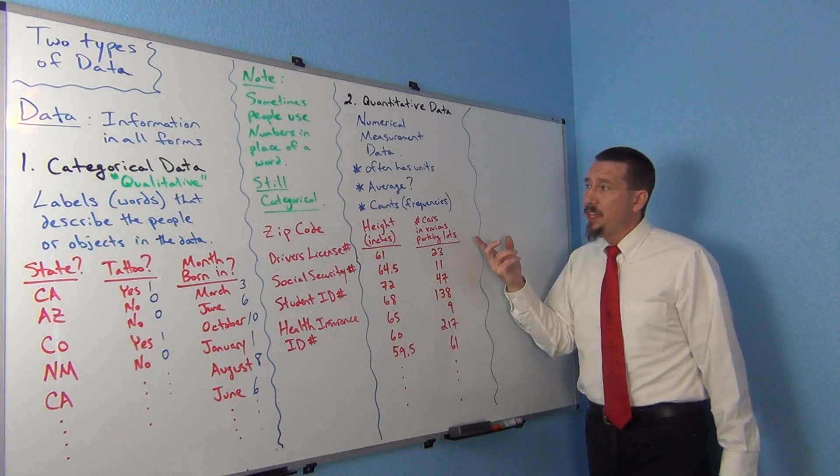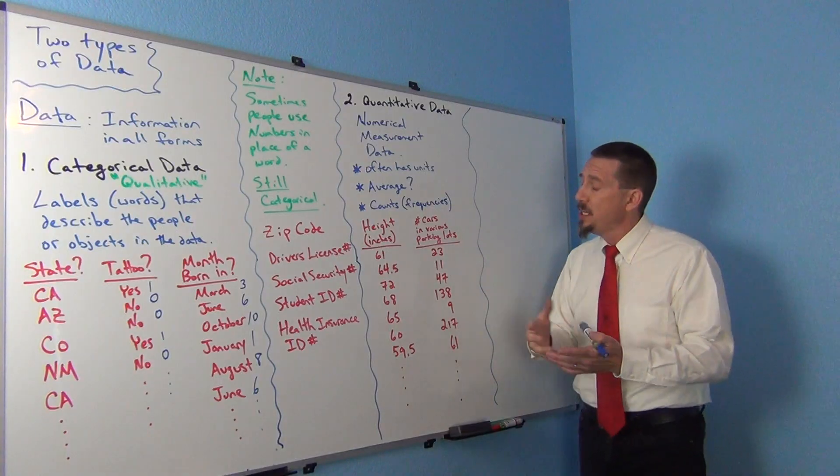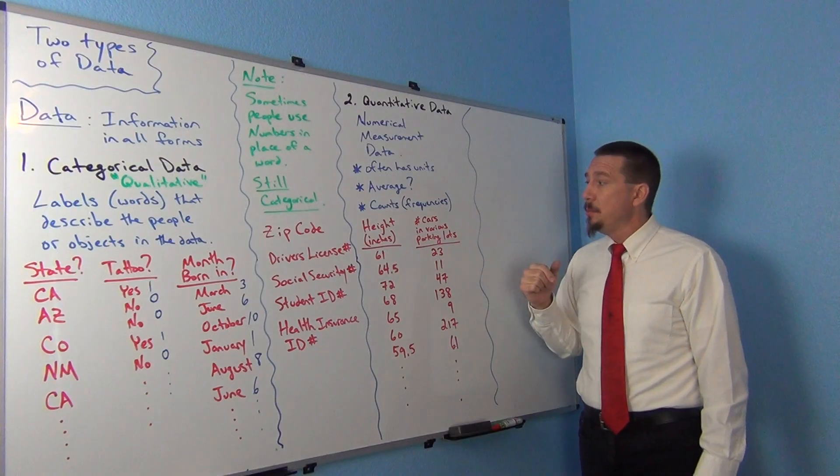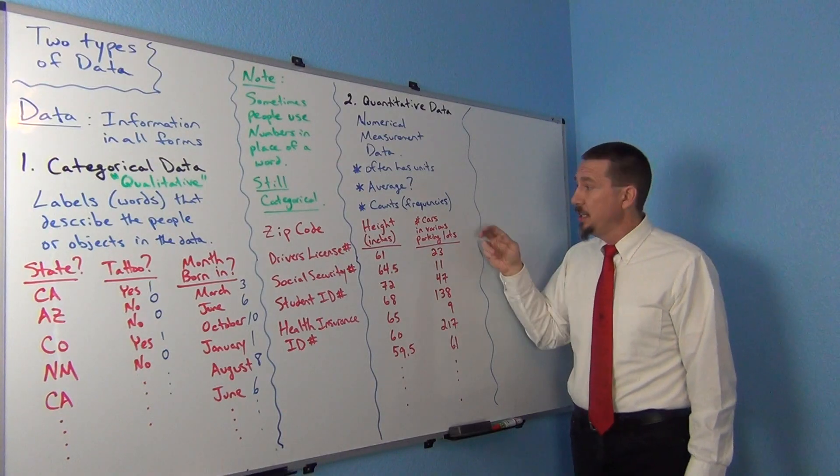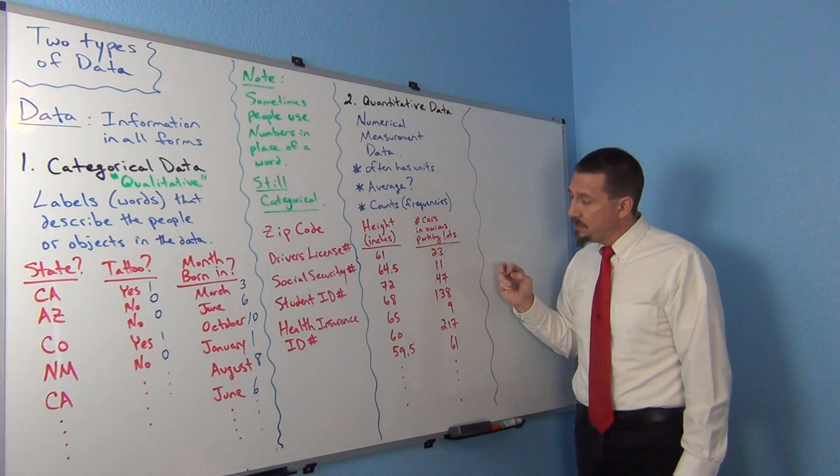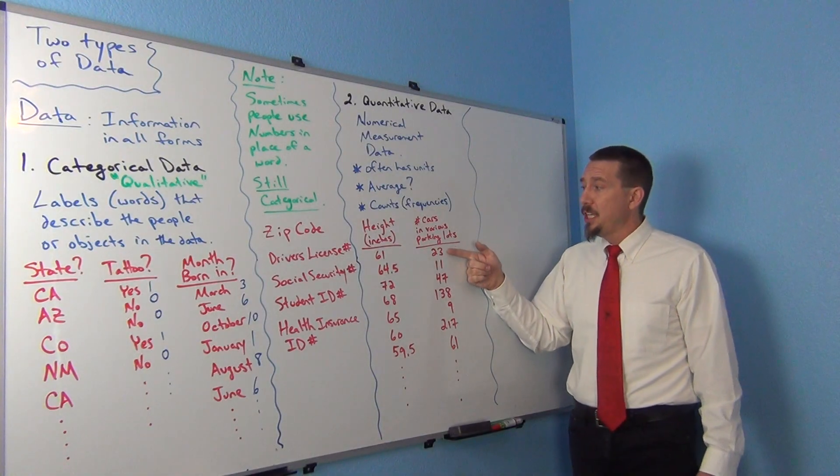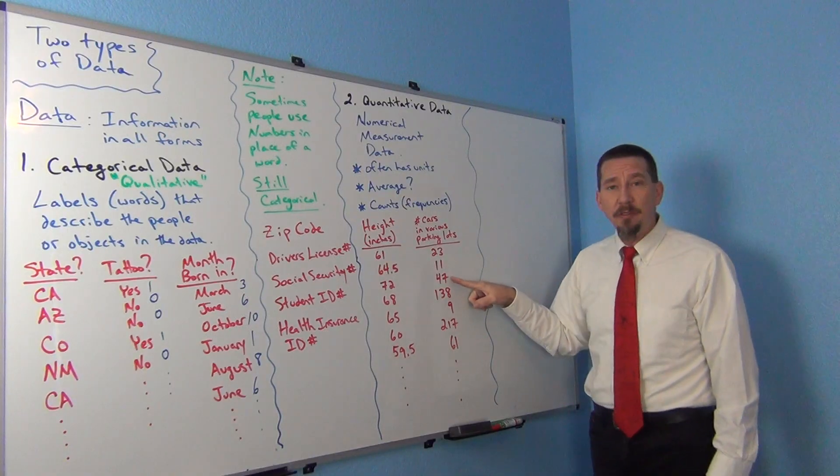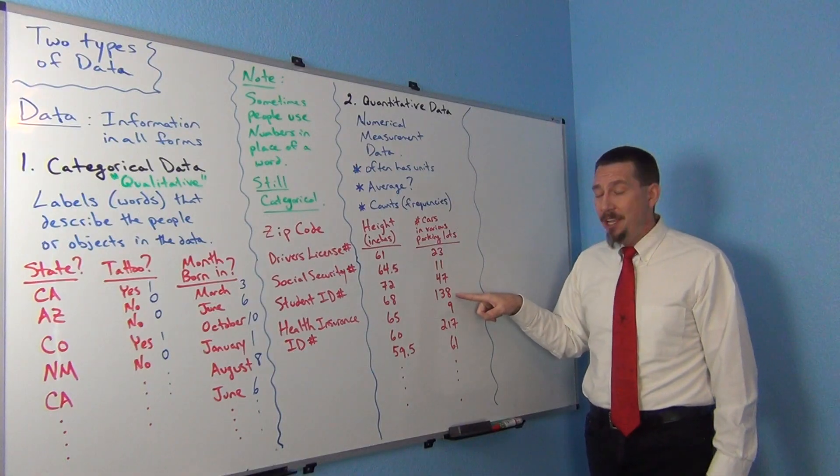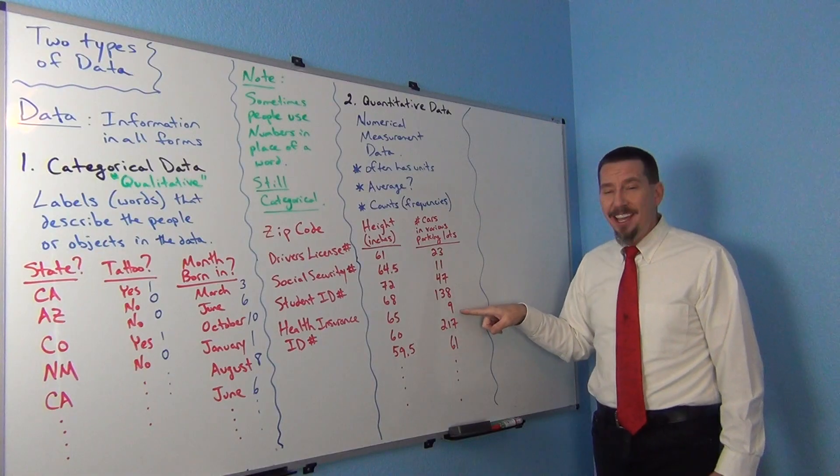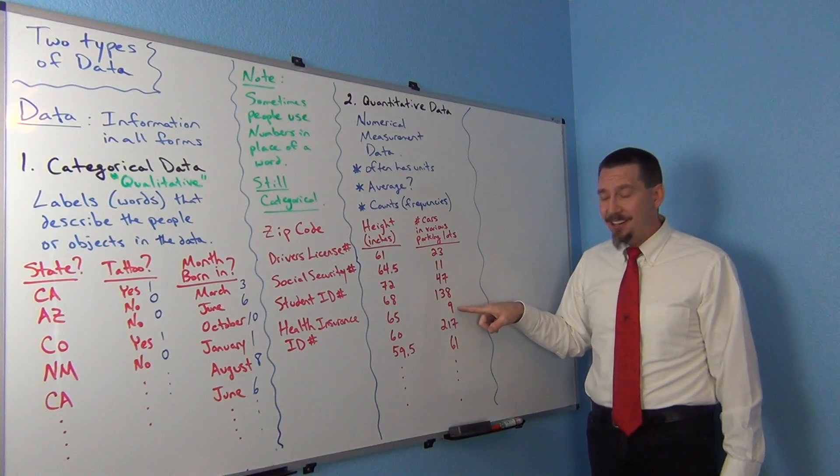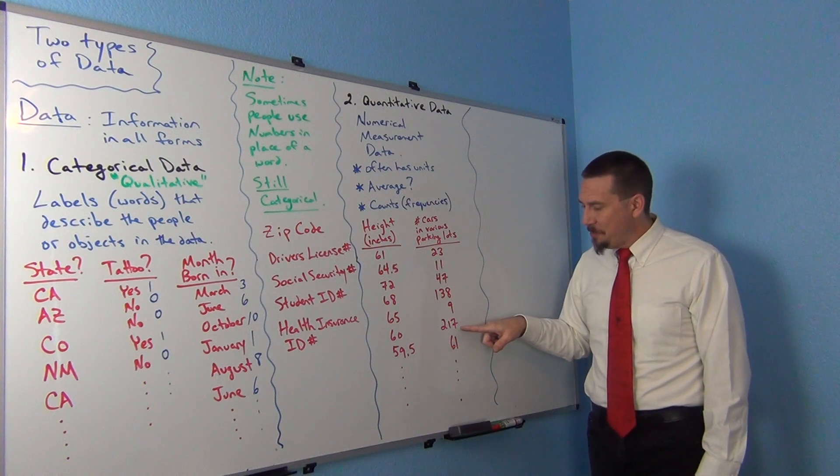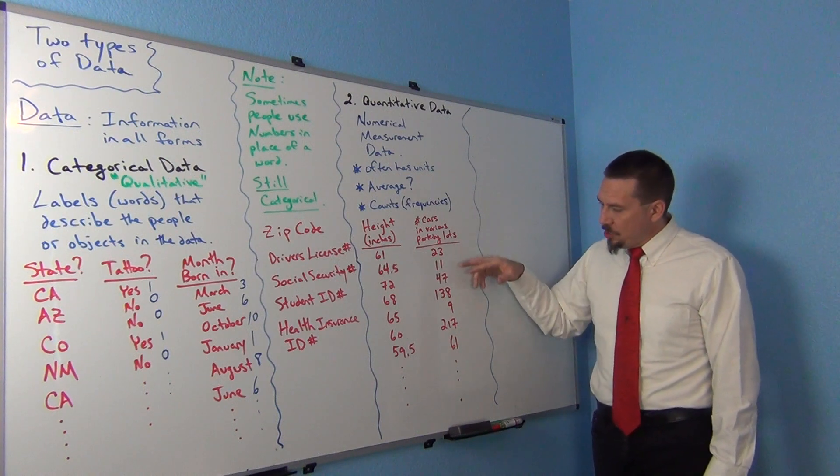I asked people their height in inches. One person was 61 inches and one person was 64.5 inches. The next person was 72 inches and 68 inches and so on. Now notice this data is numbers, and it's measuring something. It's measuring the heights of people. It also has units. Inches. And I'd really be interested in what the average height of these people would be. I could figure out the average height. So that also tells me quantitative.